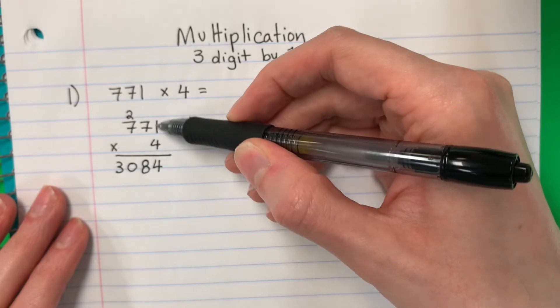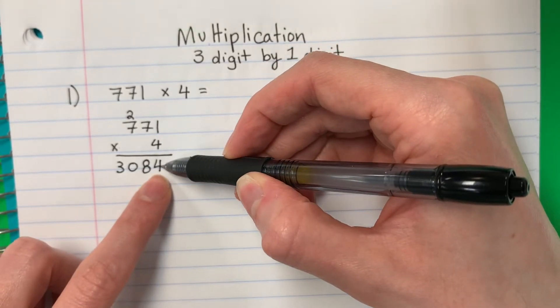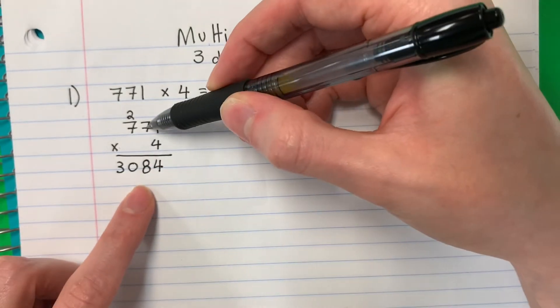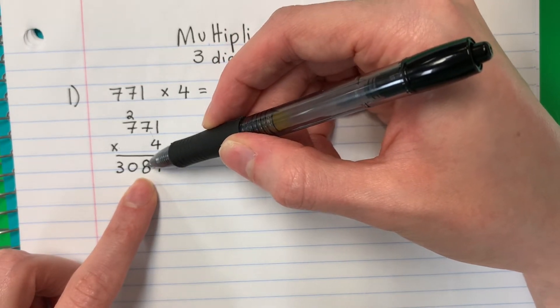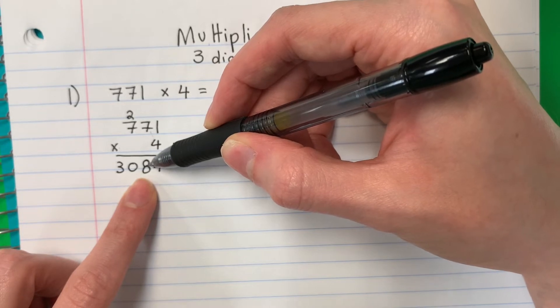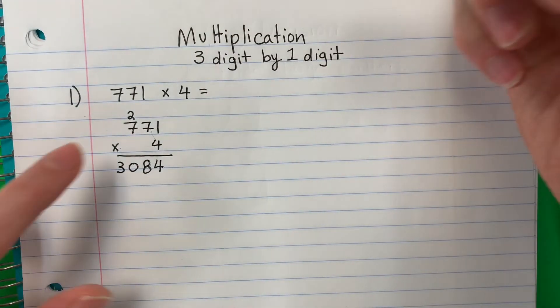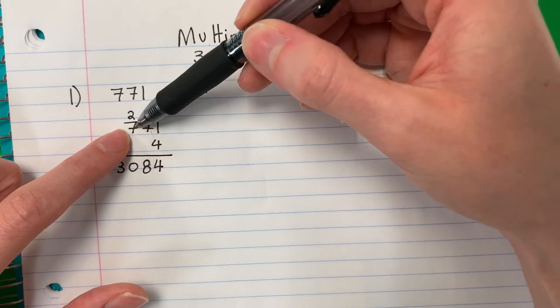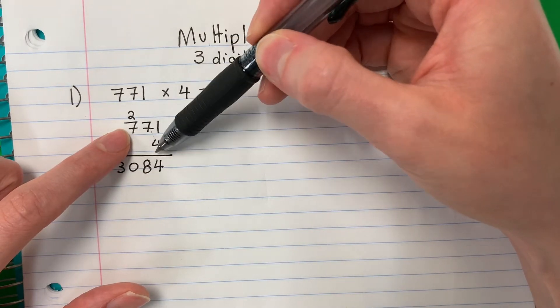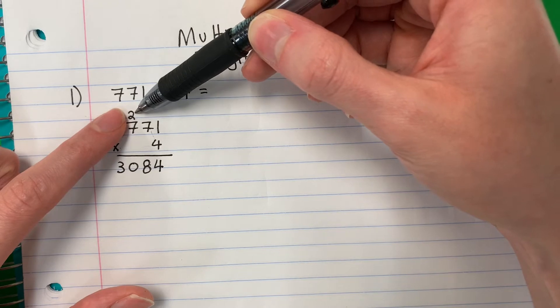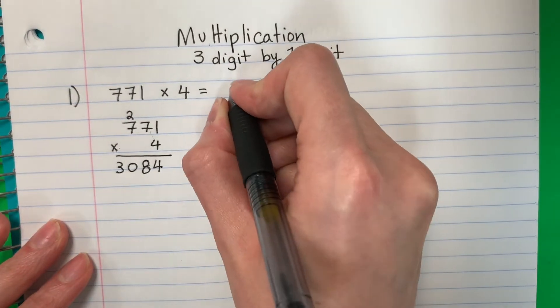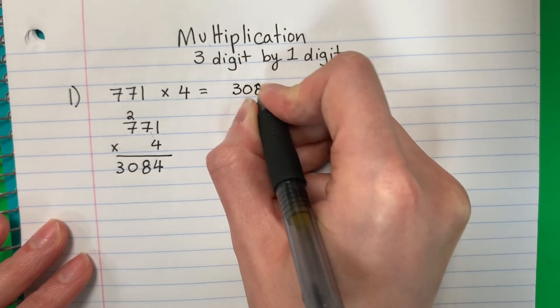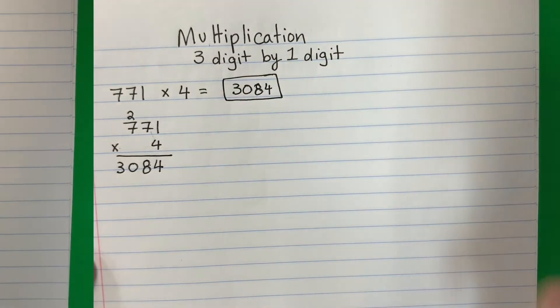So one more time, you do four times one. Cuatro por uno, four. Cuatro. Seven times four, siete por cuatro, is twenty-eight. Veintiocho. You write the eight, ocho, aquí. And the two here, y el dos aquí. And then again, y otra vez, seven times four, siete por cuatro, twenty-eight. Veintiocho plus two, más dos. Twenty-eight plus two is thirty. Veintiocho más dos es treinta. And you write it. So this is my answer. Esta es mi respuesta. Always circle your answer.